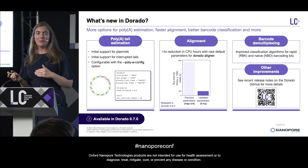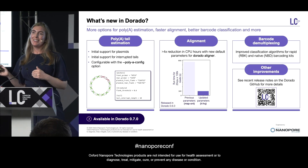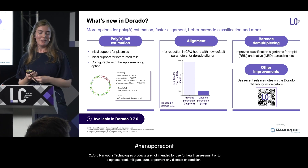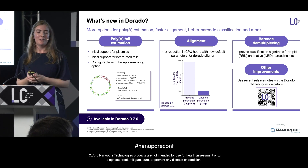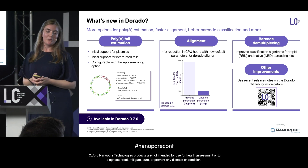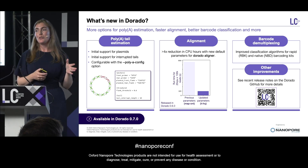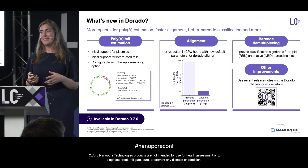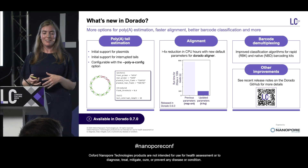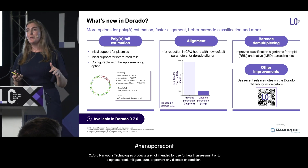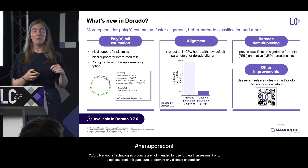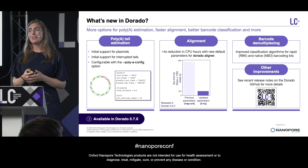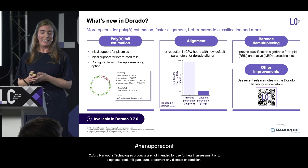We also have various other new features going into Dorado over the last six months. We have extensions to poly-tail estimation — we're now supporting plasmids and interrupted tails. This is all configurable with the poly-tail config command, so hopefully straightforward — try it out and let us know what you see.